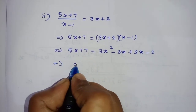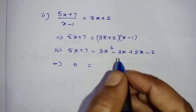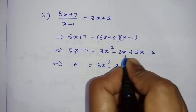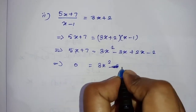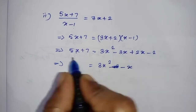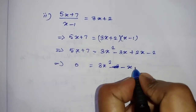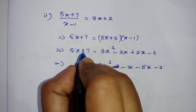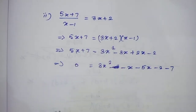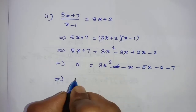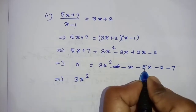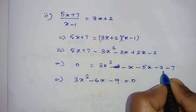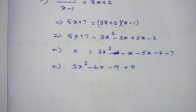Collecting terms: we have 3x², then minus 3x plus 2x gives minus x, and then plus 5x on the other side gives minus 5x. For constants: minus 2 and plus 7 gives minus 7 brought over. So in total we get 3x² minus 6x minus 9 equal to zero.